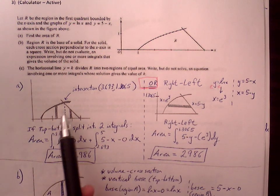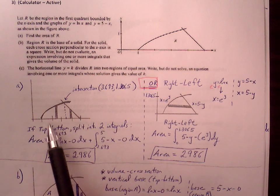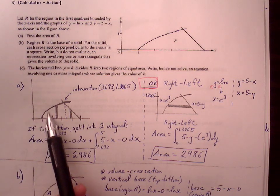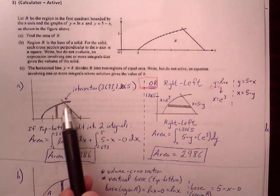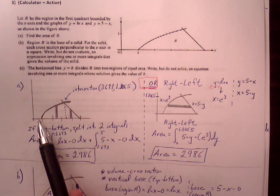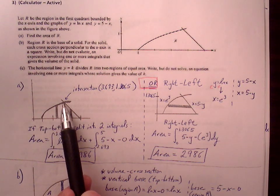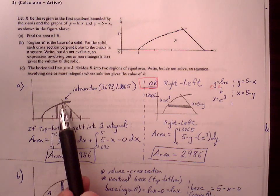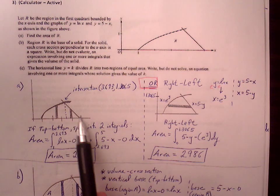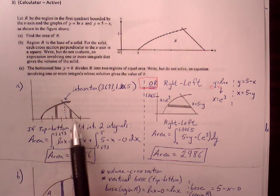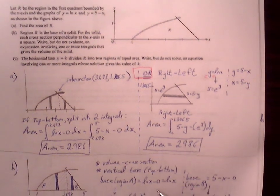The reason we need this for top minus bottom is because we don't have a consistent top function all the way through region R. Up until this point, this dotted line here, the top function is the curve. But then in the second region, the top function changes to the linear graph. So we need two separate intervals to represent the full top minus bottom.